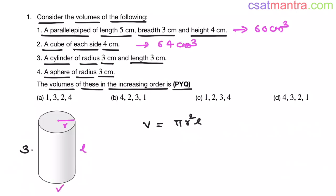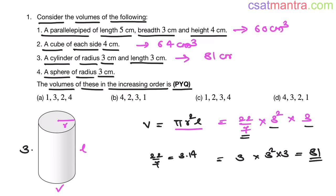This is cylinder of radius R and length L. Length is height. Volume of cylinder is π R square L. π is 22 by 7, R is 3, 3 square, L is 3. Since 7 does not cancel anyone here, I am approximating 22 by 7 as 3. So 3 into 3 square into 3. This is 81. It should be greater than 81.